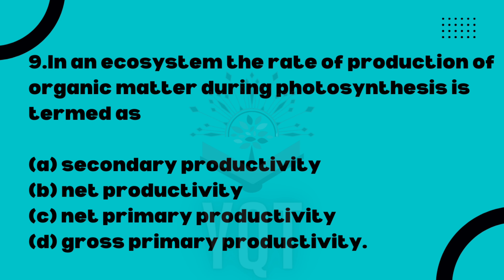In an ecosystem, the rate of production of organic matter during photosynthesis — what is this called? This is an important area in ecology and can be confusing. Option A: secondary productivity. Option B: net productivity. Option C: net primary productivity. Option D: gross primary productivity. The correct answer is Option C — net primary productivity.